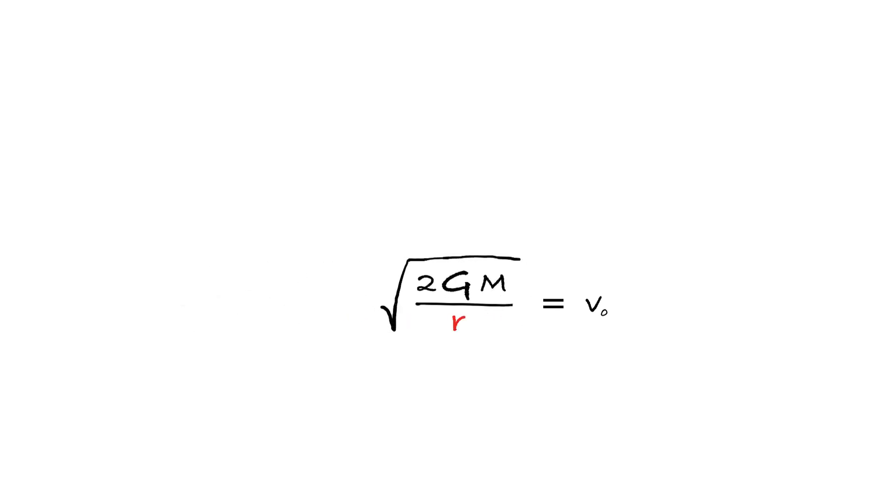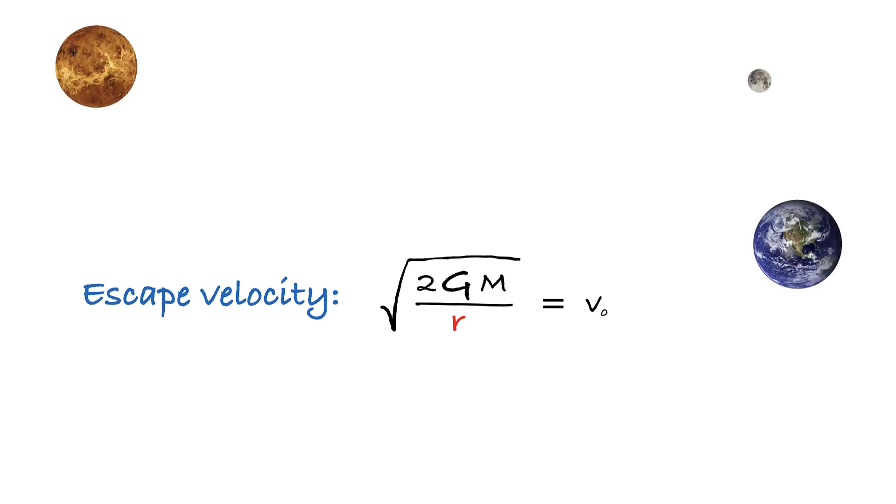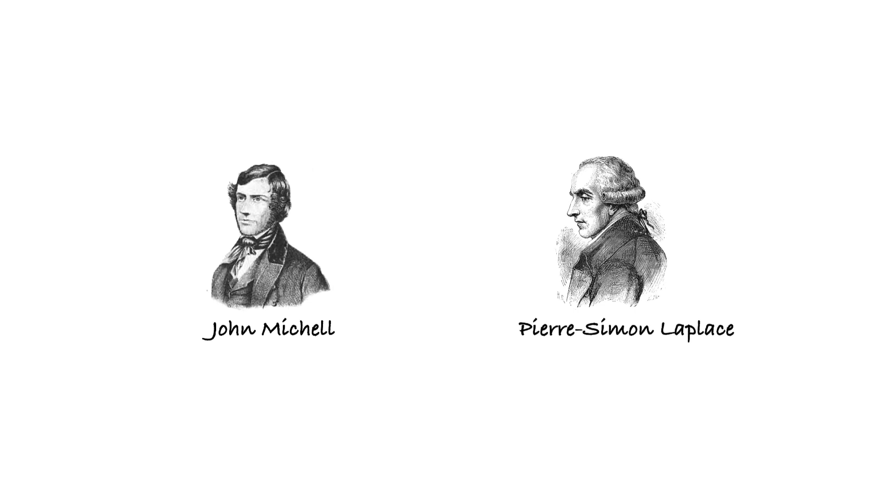This value is called the escape velocity, which is literally the minimum velocity sufficient to escape the gravitational pull of the planet. In fact, this is exactly the velocity that any rocket has to acquire as a minimum if we wanted to escape the gravity of Earth to travel to Moon or Mars, for instance. In 18th century, geologist John Mitchell and independently a famous mathematician Pierre-Simon Laplace used this formula to arrive at a very interesting conclusion.